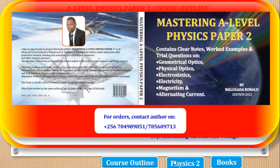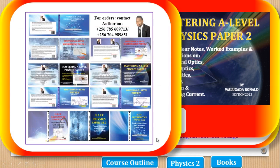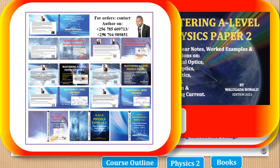On this platform, we are interested in worked examples, but complete notes are available in a book called Mastering A-level Physics Paper 2. It contains all topics, notes, worked examples, and trial questions for all topics in Physics Paper 2. For copies, contact the author on the given contacts. A complete set of physics has three books: Physics 1, Physics 2, and a topical question bank. For Principal Mathematics, there are also three books. For Subsidiary Maths, it is only one book.